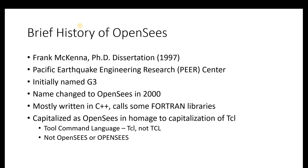OpenSees was initially named G3, and that was the group designation within PEER for simulation and testbed model development. The name was then changed to OpenSees in 2000.